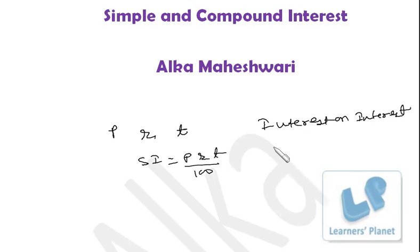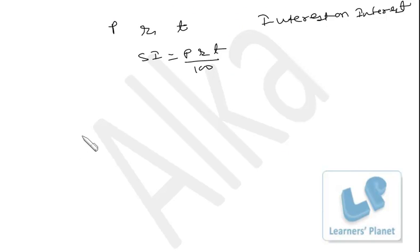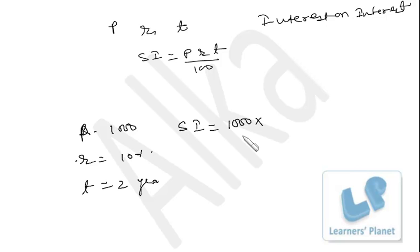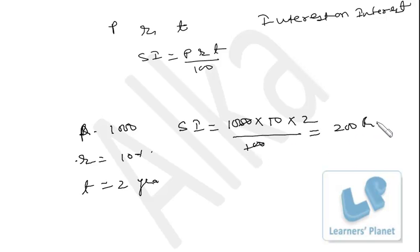Now, suppose you have an amount of Rupees 1,000, rate of interest 10% per annum, and time is 2 years. In case of simple interest: principal 1,000, rate 10, time 2 years, divided by 100 — so total simple interest is Rupees 200.